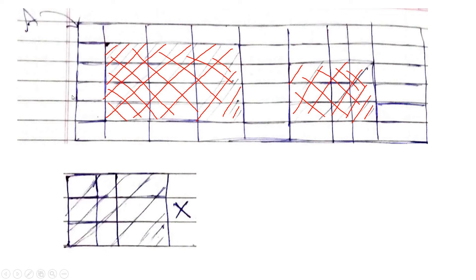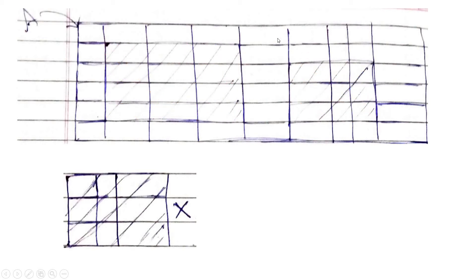Generally, to find an object we use that particular object as a structuring element in the morphological operation and we perform erosion. Erosion will fit only at that position where the structuring element completely fits in the object; otherwise it will make that part background. That is the simple idea. Now let's consider this as our structuring element and try to find where it perfectly fits in image A.